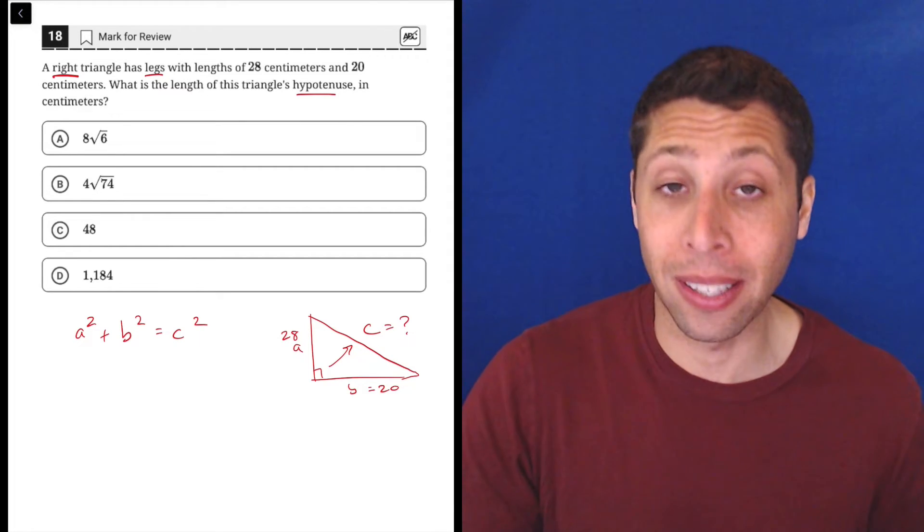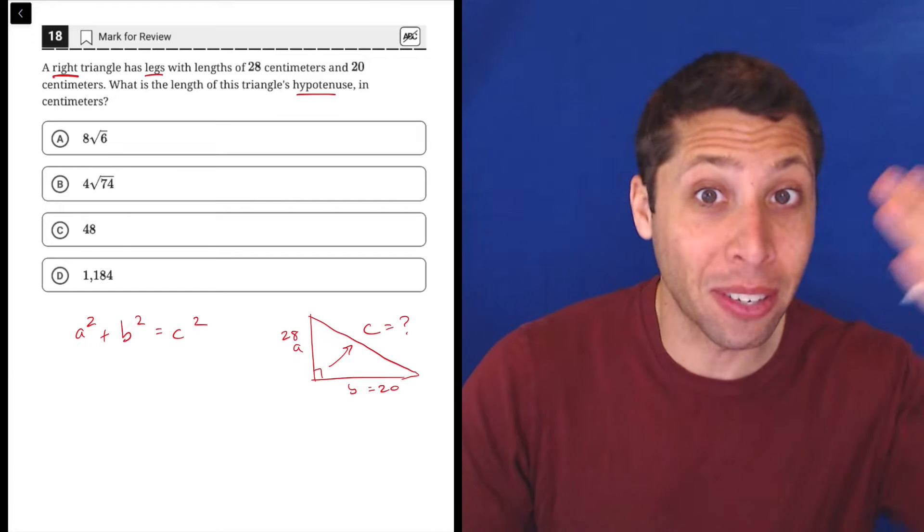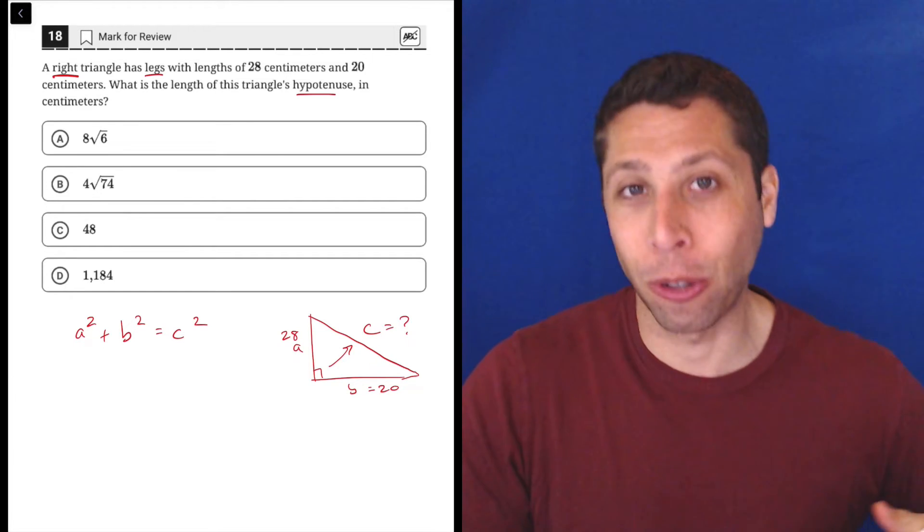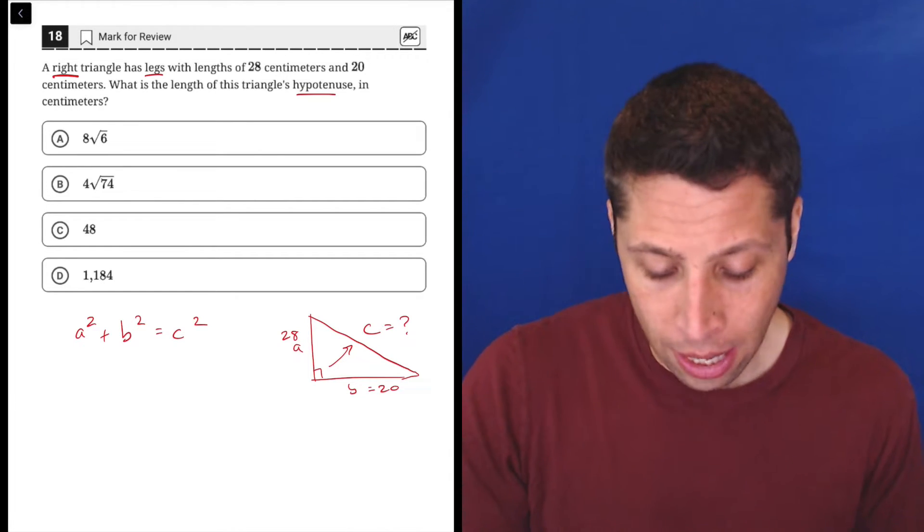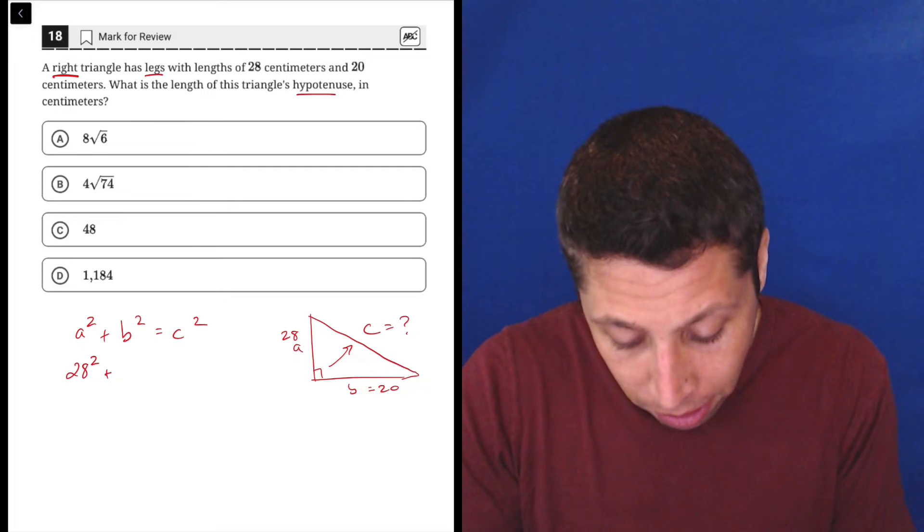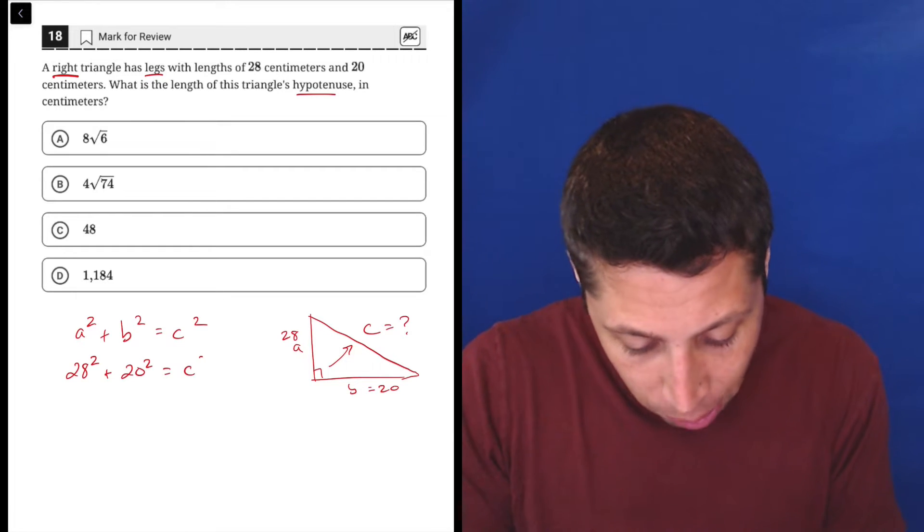So that's always the thing people mess up. So just be careful. Sometimes they give us the hypotenuse and they make us solve backwards for a leg. Here, it's more straightforward. So let's just plug in 28 squared plus 20 squared is equal to C squared.